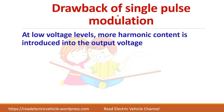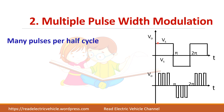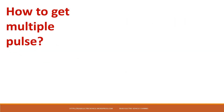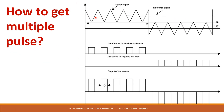The drawback of single pulse modulation is that at low voltage levels it may introduce more harmonic content into the output voltage. Next we will see multiple pulse width modulation. In multiple pulse width modulation, there are many pulses per half cycle. All pulses have equal width, which ensures the waveform satisfies symmetry and harmonics are further reduced. The multiple pulses are generated using a triangular carrier wave and a square reference wave, with the carrier signal at a higher frequency.